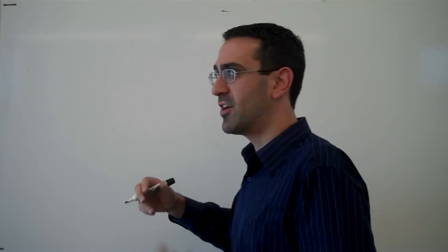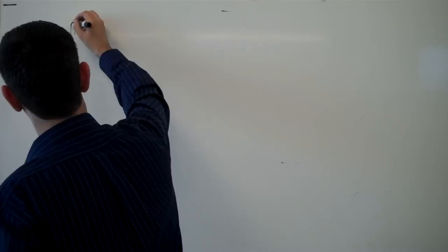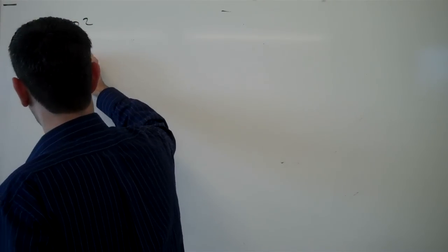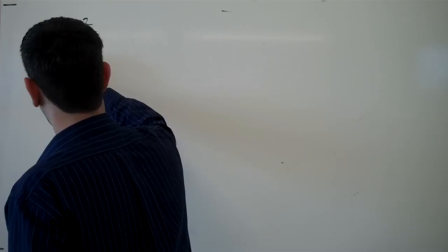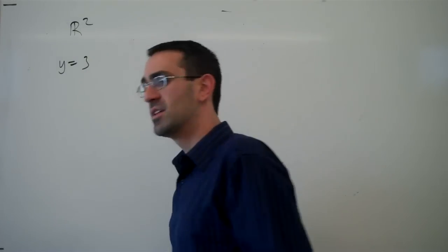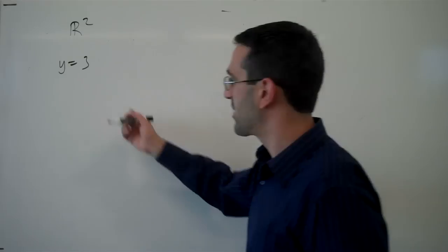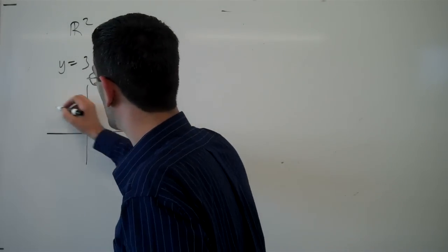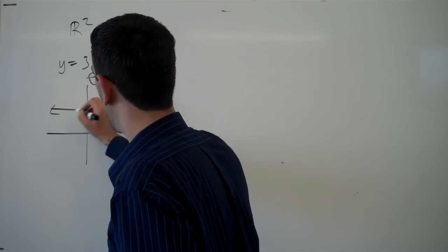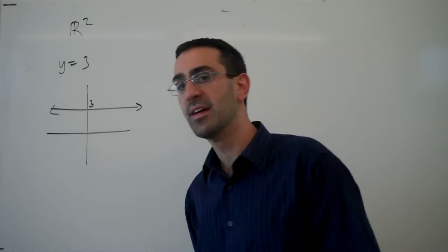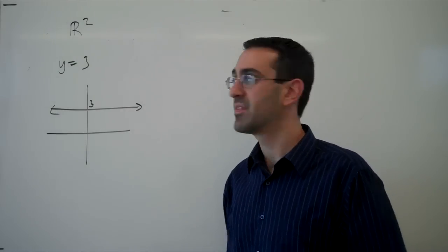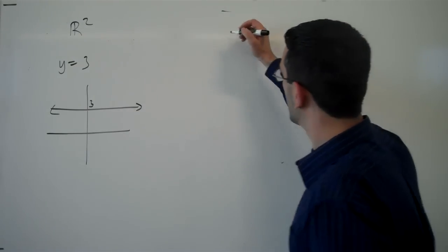Now, in R2, in two-dimensional space, if I have an equation like y equals 3, what does that equation describe? That equation describes all the points that are at a y value of 3. It defines a line in two-dimensional space.